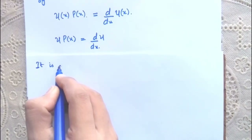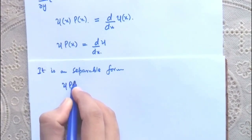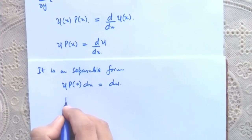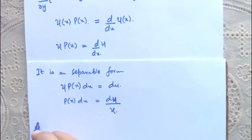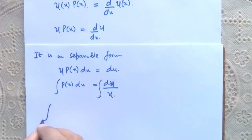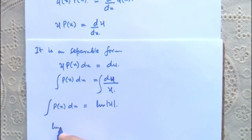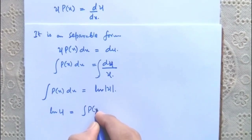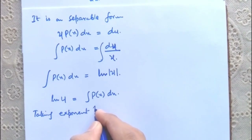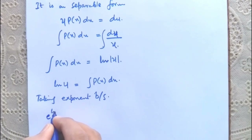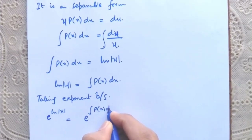This is a separable form. So P(x)dx = dμ/μ. Integrating both sides, we get ∫P(x)dx = ln μ, or ln μ = ∫P(x)dx. Taking the exponent of both sides: e^(ln μ) = e^(∫P(x)dx).